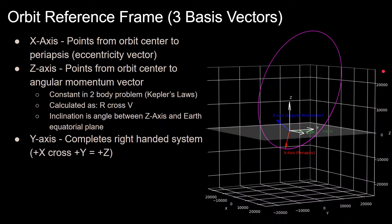We'll start by defining the reference frame basis vectors describing an orbit. In this video, we'll be using a Molniya orbit, since it has an eccentricity of 0.7, making it easy to see where the perigee and apogee points are. Perigee is the closest point in the orbit, and apogee is the farthest point.